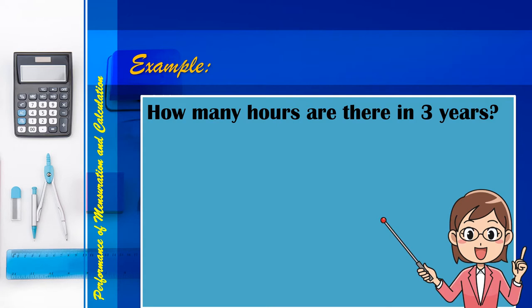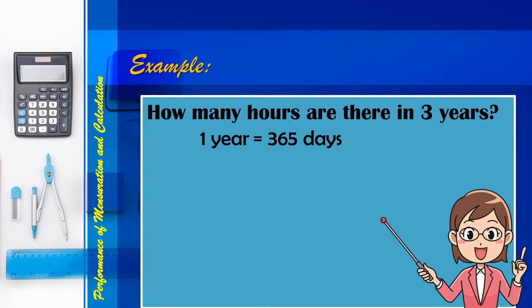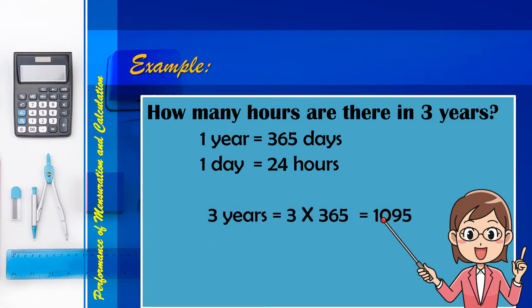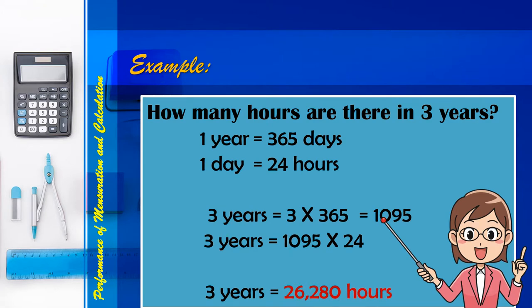Let's have an example: How many hours are there in 3 years? We know that in one year there are 365 days, and in one day there are 24 hours. So we multiply 3 years times 365 days, which equals 1,095 days. Then we multiply 1,095 times 24 hours. The answer is 26,280 hours. So in 3 years, we have 26,280 hours.